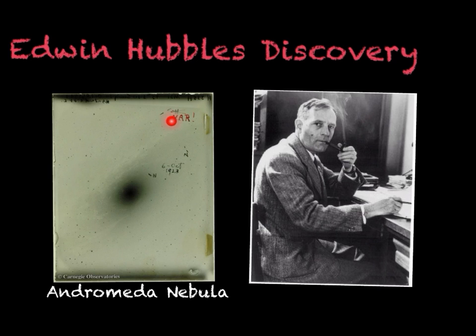Here, between these two black lines, there's a Cepheid variable star, which he famously wrote VAR with an exclamation point because he got excited. And he found that that star was very, very far away, meaning that it could not be within our nebula.